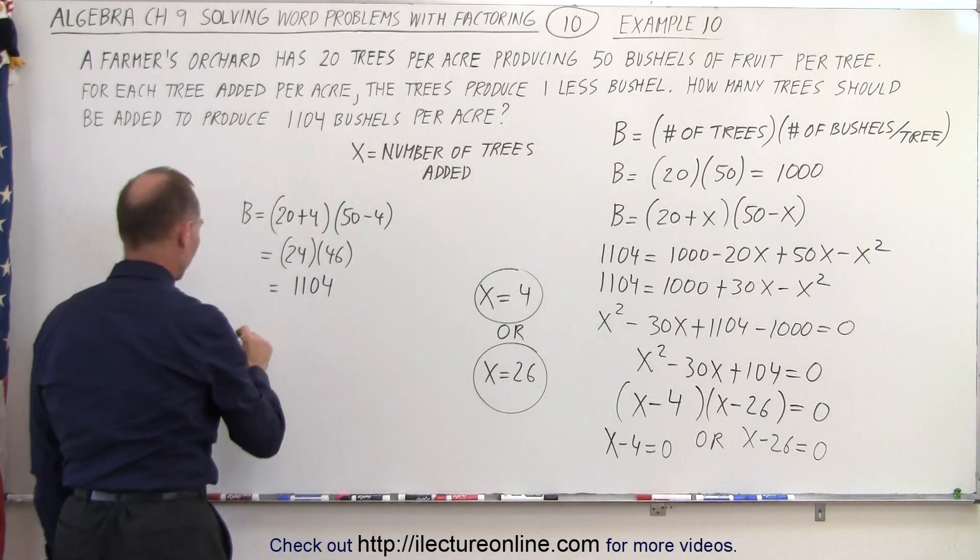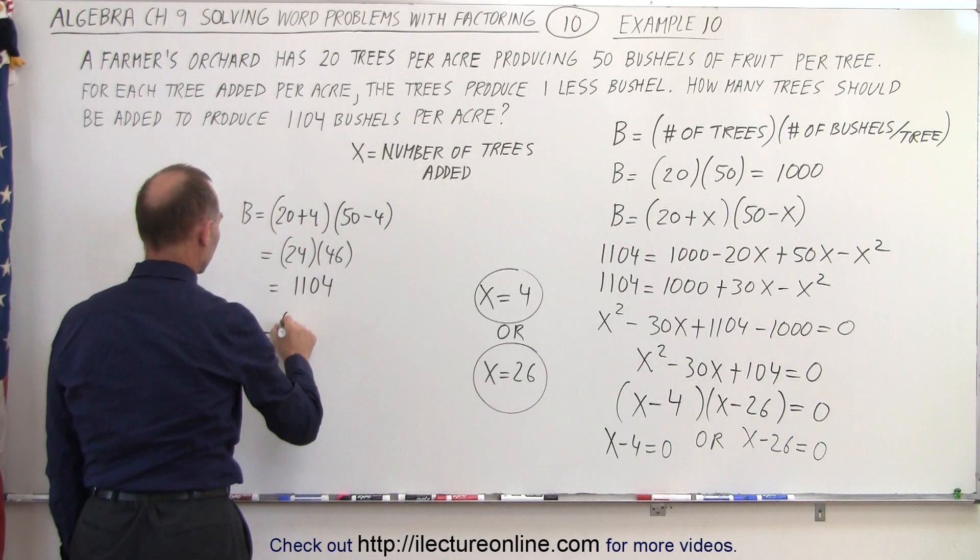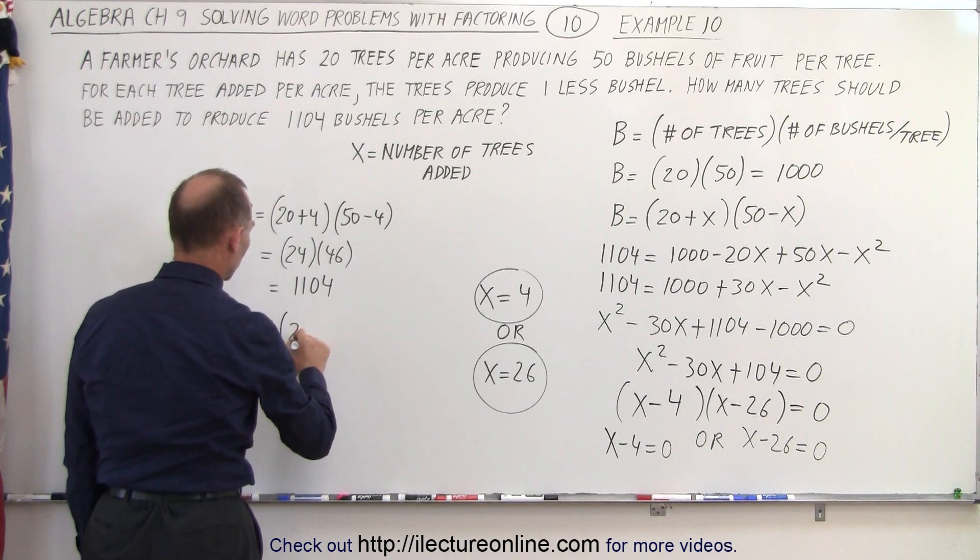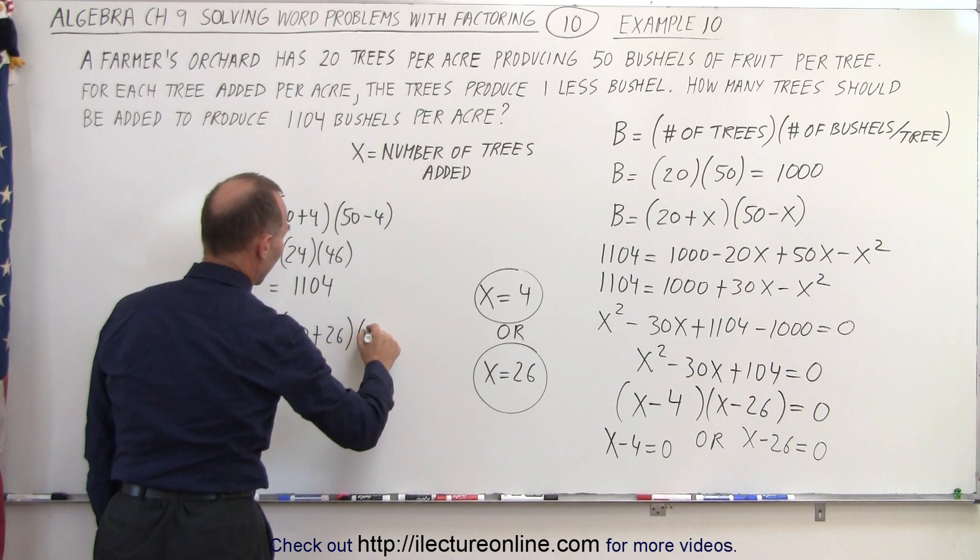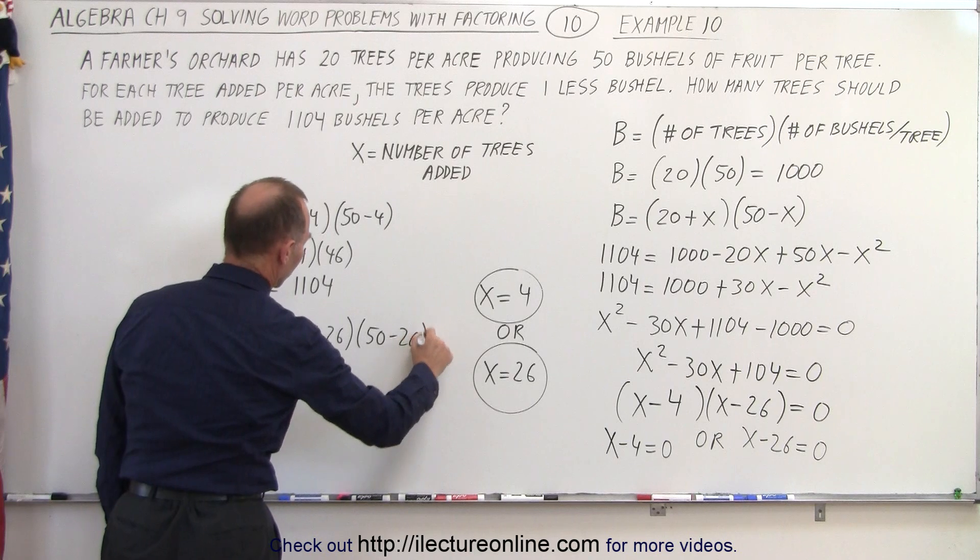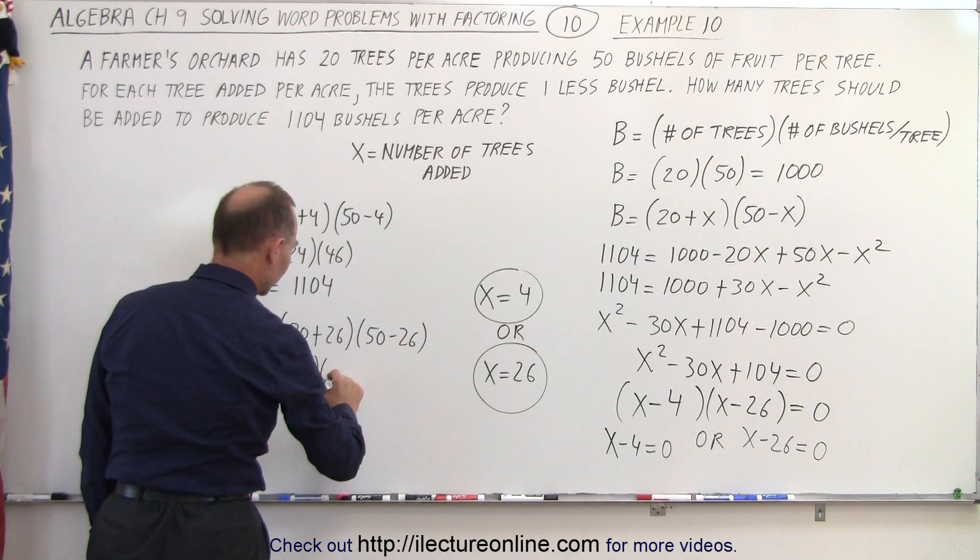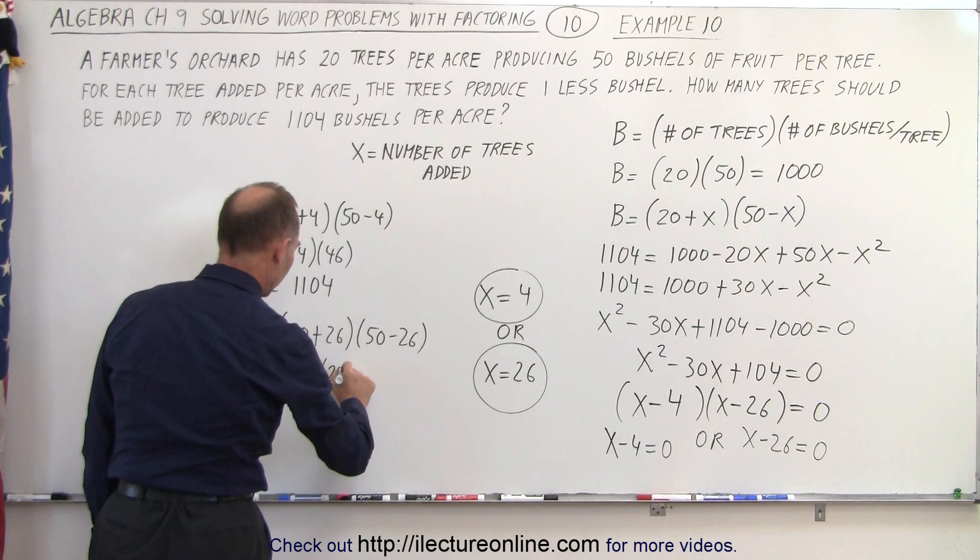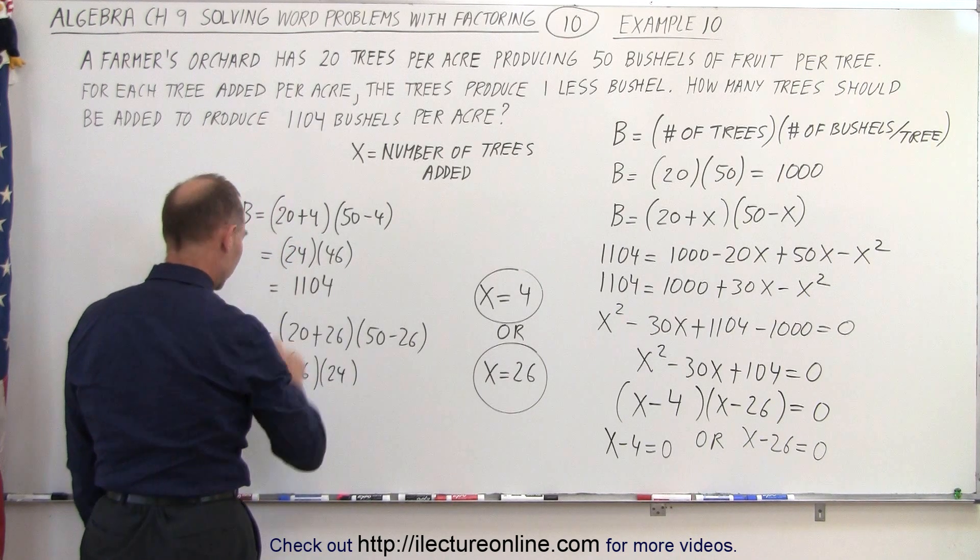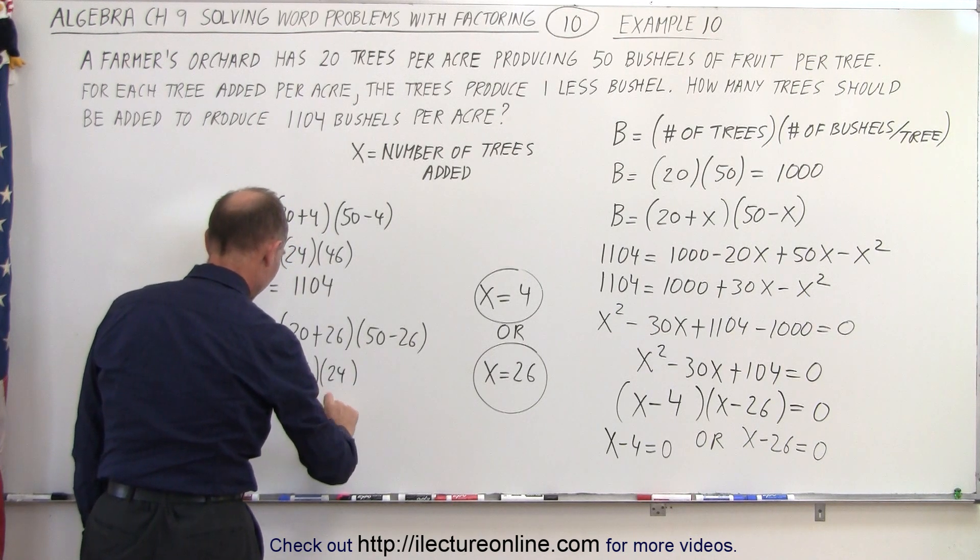What about 26? So the number of bushels will be 20 plus 26 trees. Now we have 50 minus 26 bushels. That will be 46 multiplied times 24. Notice we get the same product. So again, that will be 1,104.